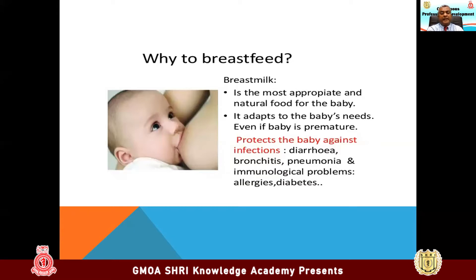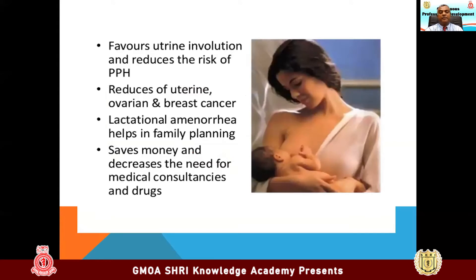Breast milk is the most appropriate and natural food for the baby. It protects the baby against infections like diarrhea, bronchitis, pneumonia, and immunological disorders. If the mother is 28 years old, all the infections she encountered are represented by antibodies deposited in the bone marrow and transmitted to the baby via breast milk. Breastfeeding also favors uterine contraction, reduces PPH, reduces uterine and ovarian and breast cancer, and lactational amenorrhea helps in family planning. It saves money and decreases the need for medical consultations and drugs. Preparing formula milk consumes a lot of money and time.